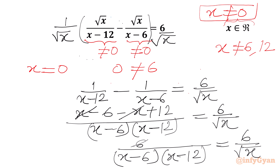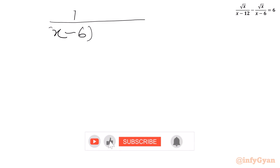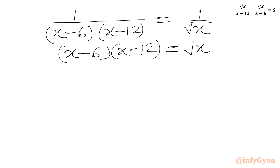This simplifies to 1 over (x minus 6)(x minus 12) equal to 1 over square root x. Now I will flip our numerators and denominators, so we get (x minus 6) times (x minus 12) equal to square root x.